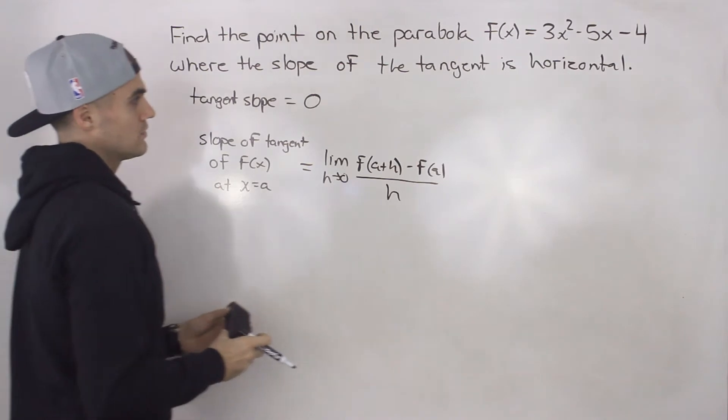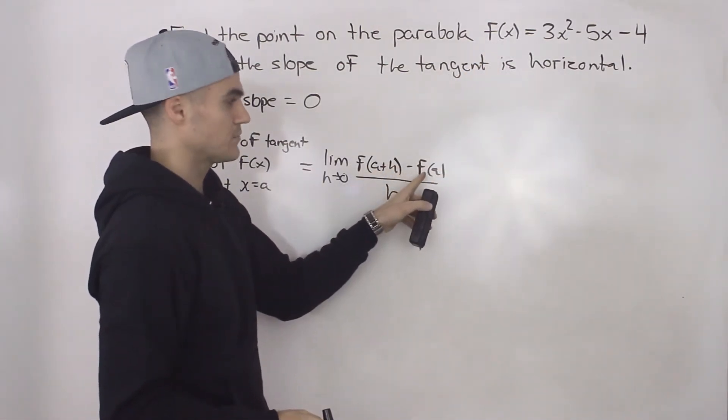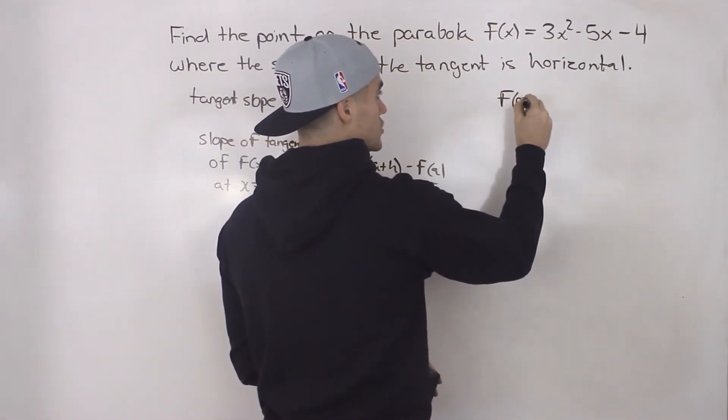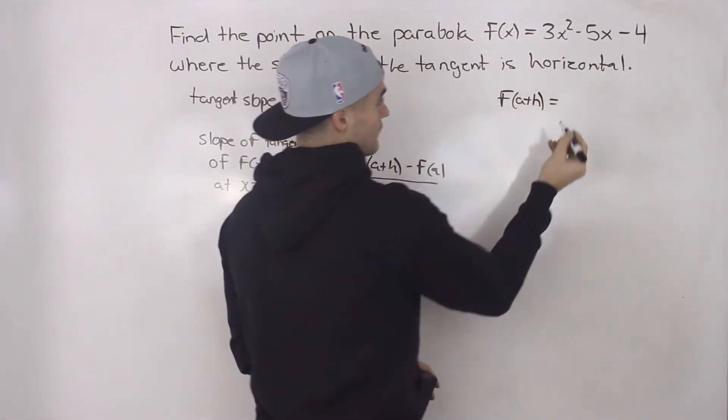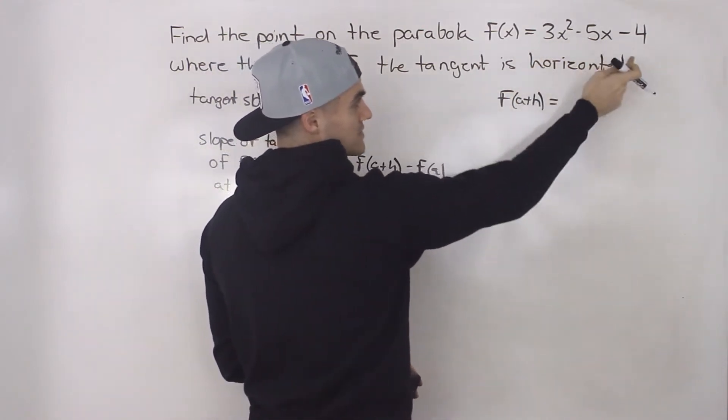So what we have to do is use this function and find expressions for f(a + h) and f(a). So let's start off with f(a + h). We take a + h and we plug it in for all the x values in the function.